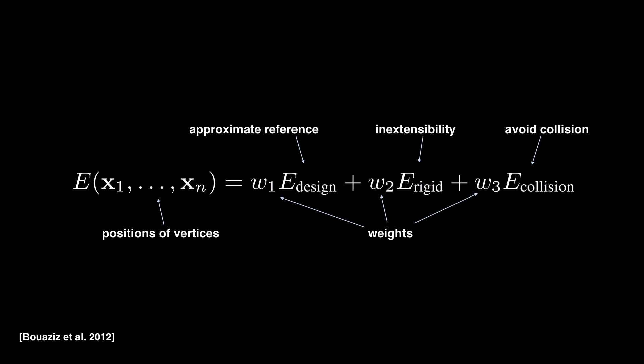We minimized this objective function with respect to the vertex positions. This optimization tries to push the linkage as close as possible to the target surface, while keeping the equilateral triangles rigid and avoiding collisions between the neighboring triangles. And by adjusting the weights, we can control the final design.